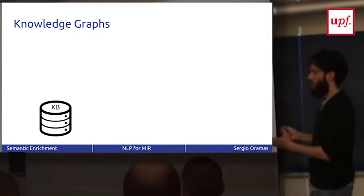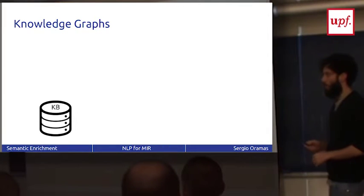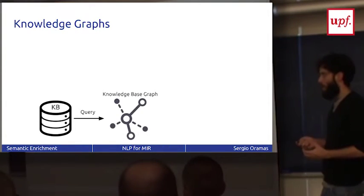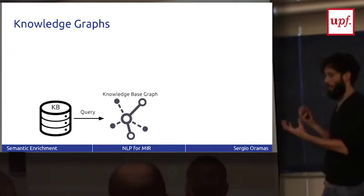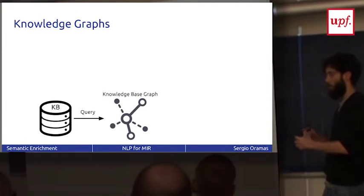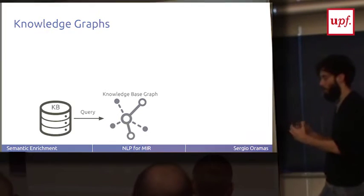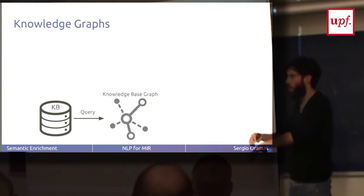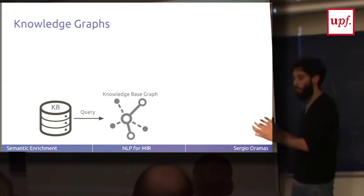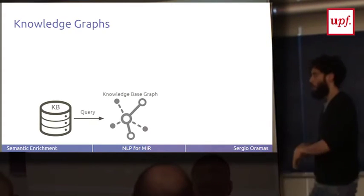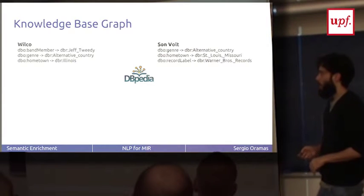So imagine we have a knowledge base. This is a knowledge base, like DBpedia, for example. And we do a query and we get information. So we build a knowledge graph with the information in the knowledge base. So the knowledge base is also a graph, but we can take a subset, for example the music information that is in DBpedia related to music, and build this knowledge graph with the information there.